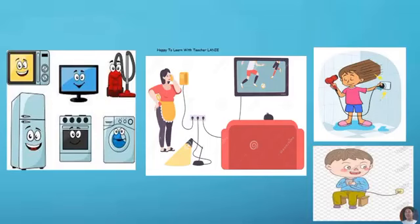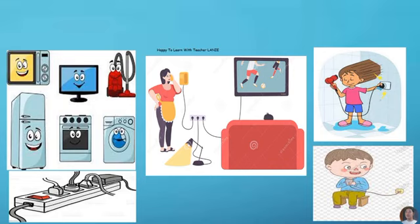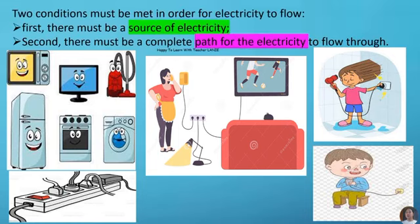Look around your house. How many appliances do you see? How many are currently plugged into your wall outlets? Most households have several devices that make use of electricity. The number of appliances that you have at homes show how important electricity is in our everyday lives. How does electricity flow to your appliances? Two conditions must be met in order for electricity to flow.